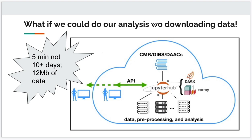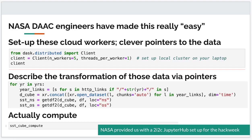I only had to download the points — just 12 megabytes of data. During the hack week, NASA set us up with a JupyterHub to do this, so it was all set up for us. The basic code is very simple: set up cloud workers, write some code to describe what analysis you want to do and how to transform the data, and then do the compute.